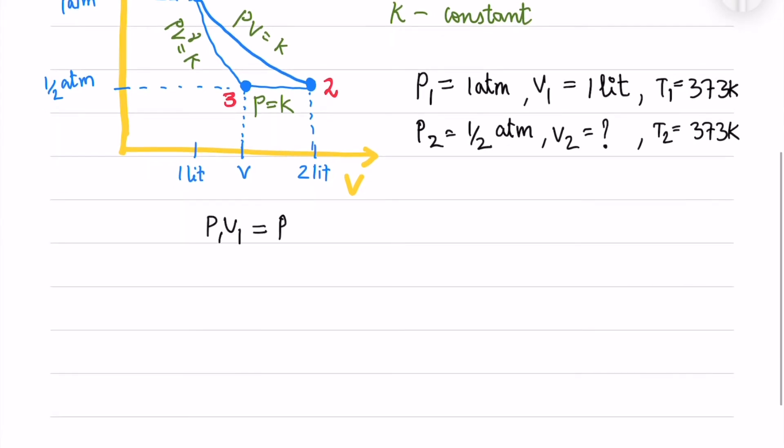For the isothermal process P1 V1 equals P2 V2, which gives V2 is nothing but half atmospheres.